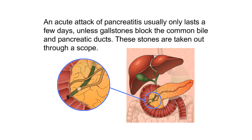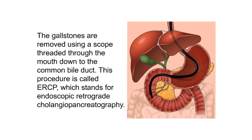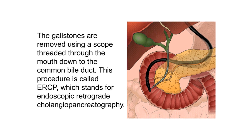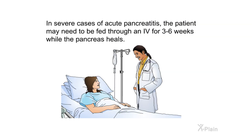An acute attack usually lasts only a few days unless gallstones block the common bile and pancreatic ducts — these stones are removed through a scope. The gallstones are removed using a scope threaded through the mouth down to the common bile duct in a procedure called ERCP, which stands for endoscopic retrograde cholangiopancreatography. In severe cases, the patient may need to be fed through an IV for three to six weeks while the pancreas heals.